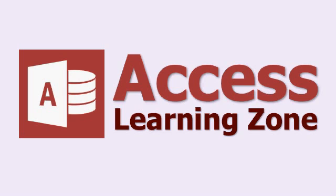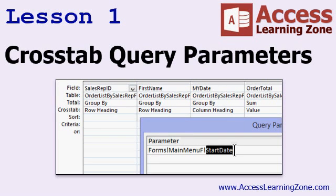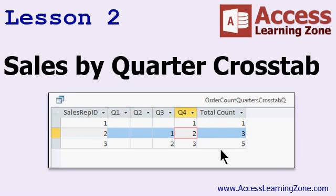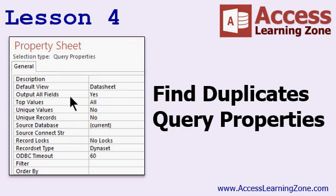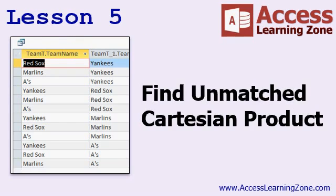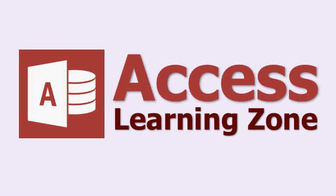Now let's go over exactly what we're going to cover in today's class. In lesson one, we're continuing our work with crosstab queries from the last class, beginning with crosstab query parameters and fixed column headings. In lesson two, we'll look at sales by quarter by sales rep, where the quarter is the column header. In lesson three, we'll use the partition function to create product tiers based on unit price, then create a crosstab query to show the count of products in each tier. In lesson four, we'll learn how to create a find duplicates query and go over advanced query properties. In lesson five, we'll learn how to build find unmatched queries and Cartesian products.